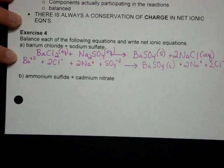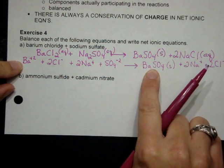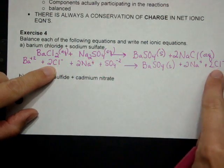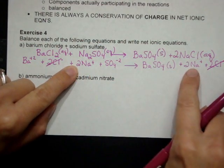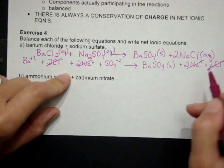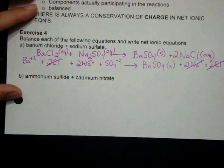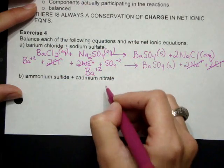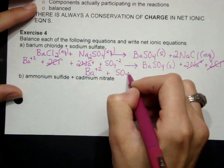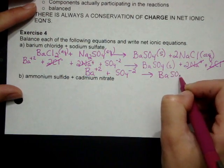And then finally, we go through and we remove anything that's in the same form on both sides. If we look at the barium, it's an ion here but it's a compound here. It has to stay. The chloride is an ion here and an ion here, so it's a spectator. It goes. Sodium is an ion and an ion. It can also go. And what we're left with, sulfate and sulfate. Those are not in the same form, so they have to stay. What we're left with then is our NIE, our net ionic equation: barium ions plus sulfate ions makes solid barium sulfate.